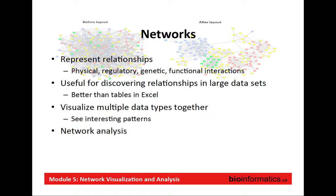Physical relationships are protein-protein interactions. Regulatory relationships are transcription factor targets — usually there's an arrow there. Genetic interactions are more often found in model organism research, where you have a logical relationship between two genes in terms of genotype and phenotype. For instance, gene A: you knock it out and nothing happens. Gene B: you knock it out and nothing happens. You knock them both out together and the cell can't survive — that's a synthetic lethal genetic interaction.